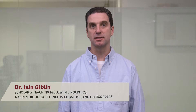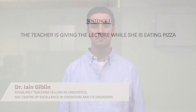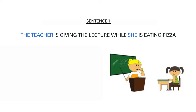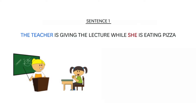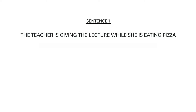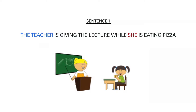Let's begin with an example of a sentence that has two meanings: 'The teacher is giving the lecture while she is eating pizza.' The pronoun 'she' can refer to the teacher, or it can refer to some female student. On one meaning, the sentence is true if the teacher is giving the lecture while she — the teacher — is eating pizza, making it a true description of one picture. The sentence is also true in a situation where a female student is eating pizza.